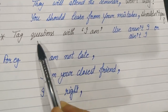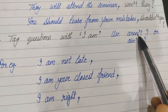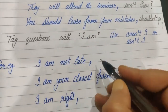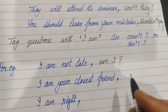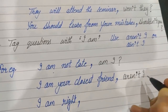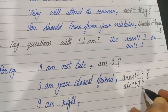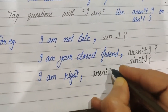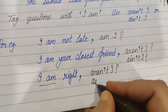Tag questions with 'I am': you have two options — you can use 'aren't I' or 'ain't I.' For example: 'I am not late' — it's a negative statement, so the tag is positive: am I? 'I am your closest friend' — the tag must be negative: aren't I, or you can write ain't I. 'I am right' — again, aren't I, because 'I am' changes to 'aren't,' or you can write ain't I.